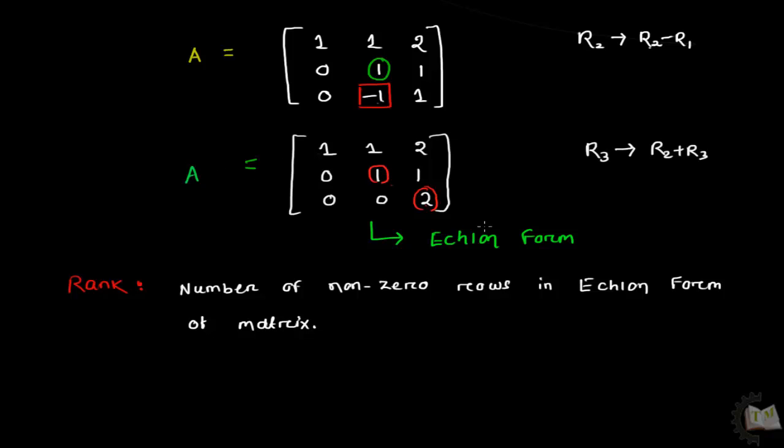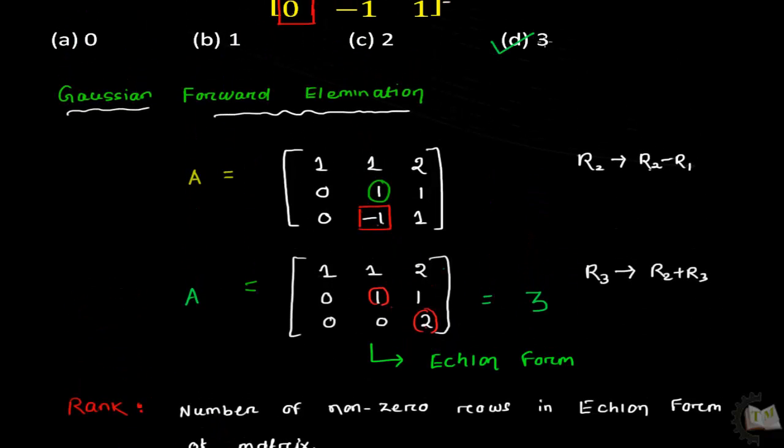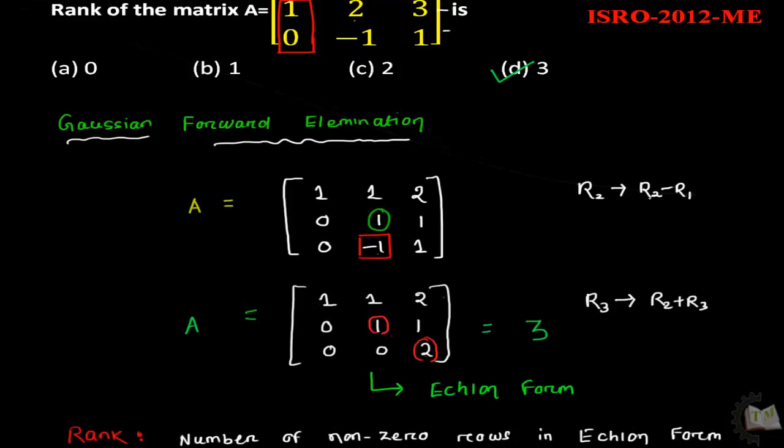Come to the matrix A, the echelon form matrix. In first row there is also non-zero, second row also non-zero and third row also non-zero. So since there are three non-zero rows in the matrix, its rank will be 3 and the answer will be D. That is rank of the matrix is 3.